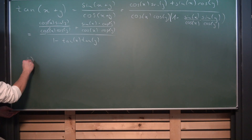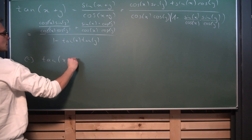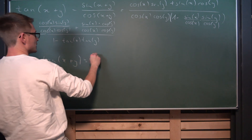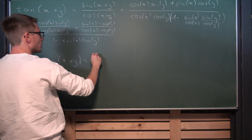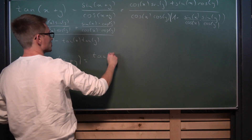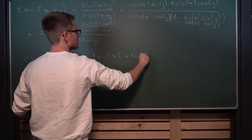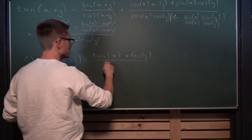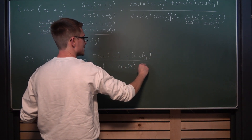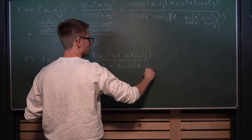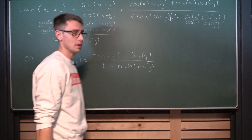So overall, this addition formula gives us: the tangent of x plus y equals the tangent of x plus the tangent of y, divided by one minus the tangent of x times the tangent of y. That right here is the tangent addition formula.